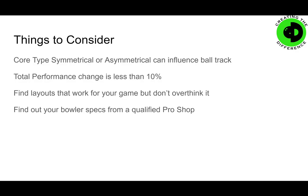Things to consider: core types — symmetrical versus asymmetrical — can influence your ball track a little bit. The performance changes we're showing you tend to be less than about 10% of the overall ball reaction. You can also change your ball reaction significantly by changing the surface — you can sand the bowling ball with true cut pads or polish it with true cut polish. The moral of the story is to find the layout that works for your game, but don't overthink this process. You can overcome a lot of these issues with selecting the right cover stock or altering the surface of the ball.